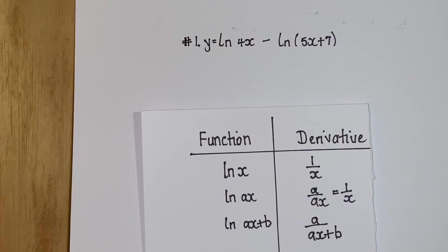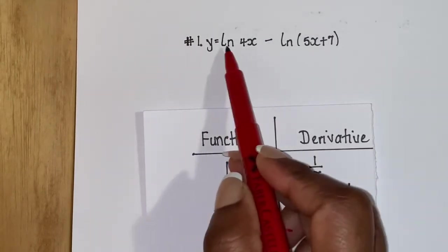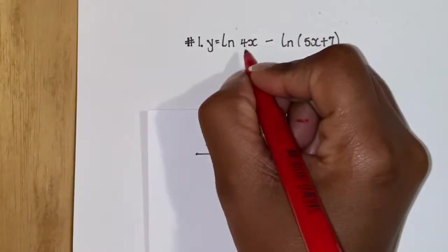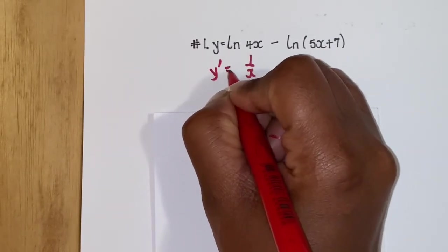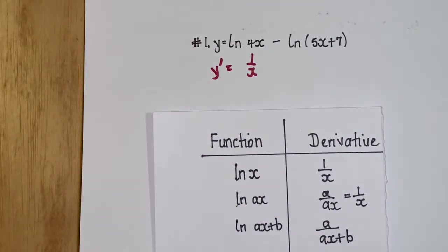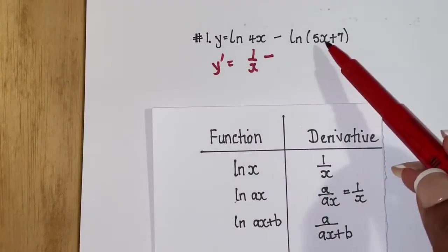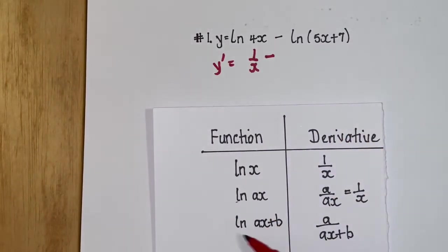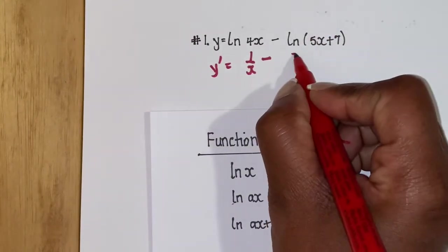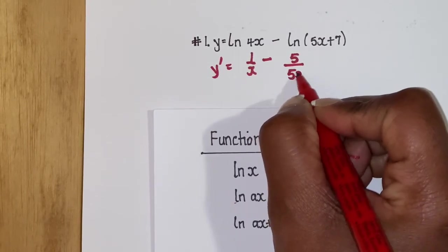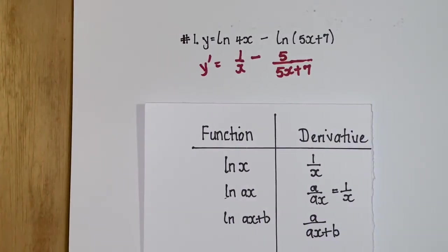Now let's work a couple of questions together. Question 1: y = ln(4x) − ln(5x + 7). For ln(4x) following this pattern we get 1 over x. For ln(5x + 7) following this pattern we get 5 over (5x + 7). So y' = 1 over x minus 5 over (5x + 7). You can leave it right there as you are not required to simplify further at this stage.